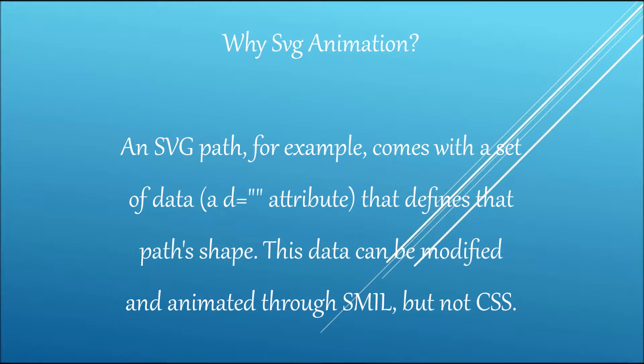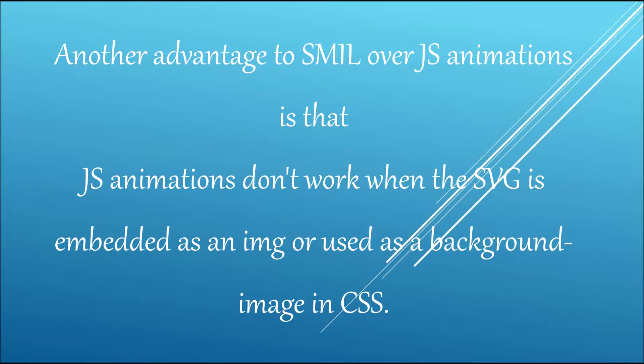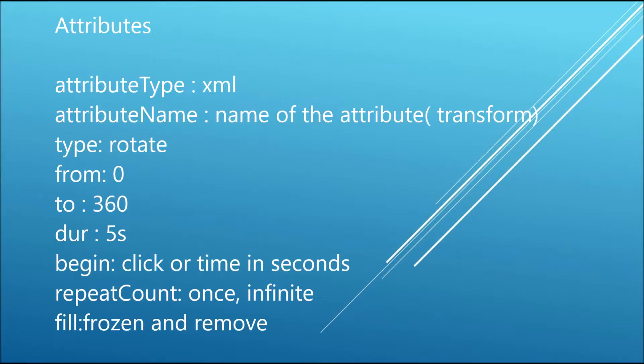Now let's discuss why SVG animations. SVG paths come with a set of data — the 'd' attribute — that defines the path shape. This data can be modified and animated using SMIL, but not CSS. Another advantage is that JavaScript animations don't work when SVG is used as an image or as a background image in CSS.